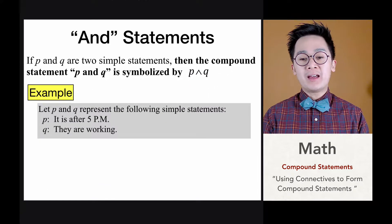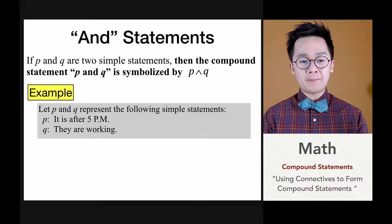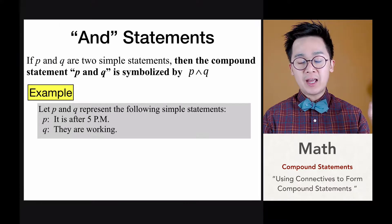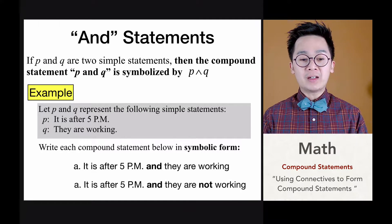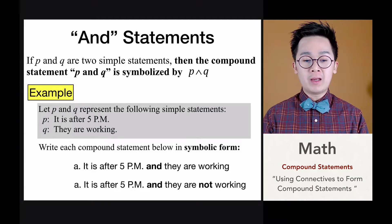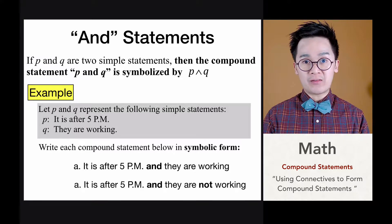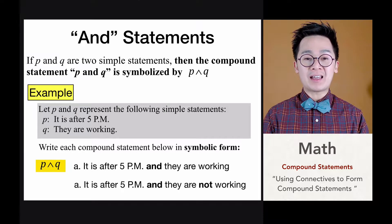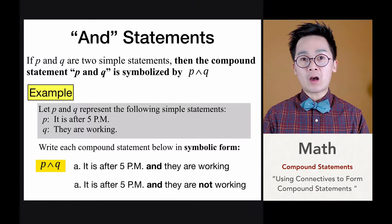How do we use this connective in symbolic logic? Let's say we have two statements: statement P is 'it is after 5pm' and statement Q is 'they are working.' We're going to connect these into a compound statement. Transforming the first sentence into symbolic form, 'it is after 5pm AND they are working' can be rewritten as P ∧ Q using symbolic logic.